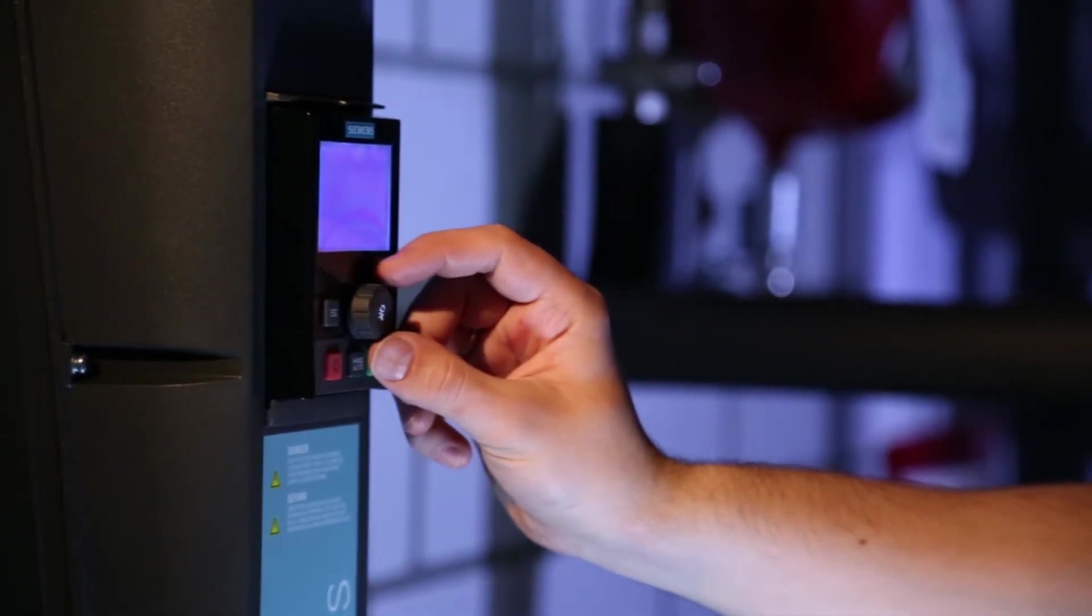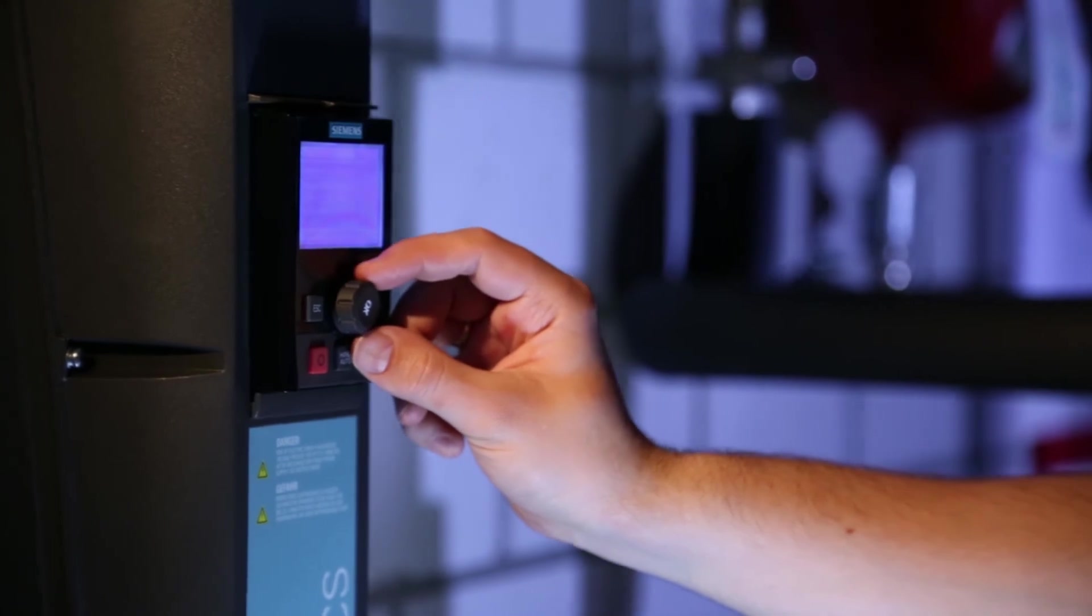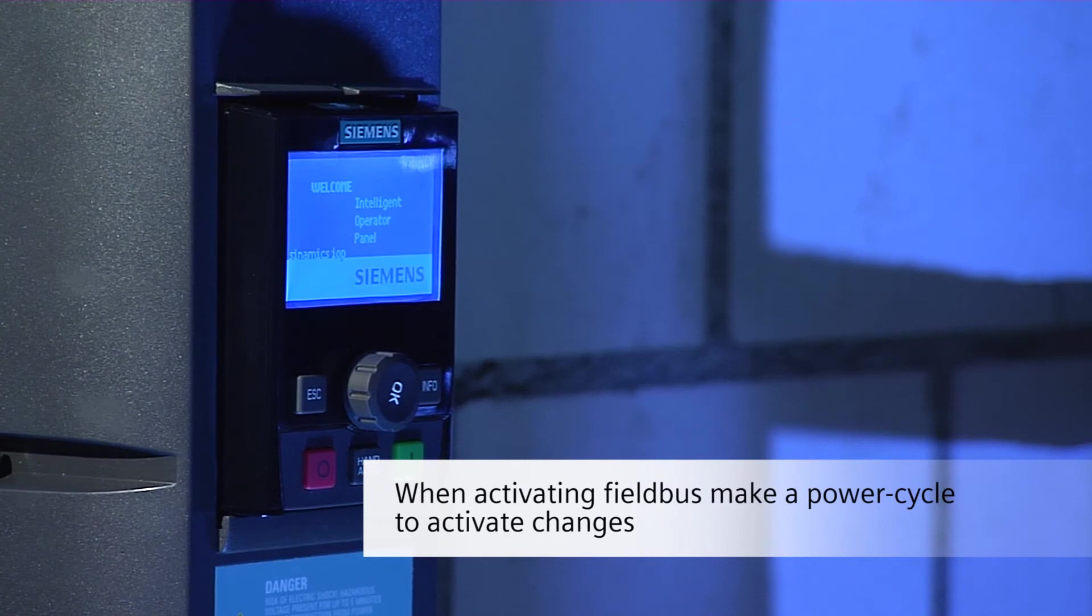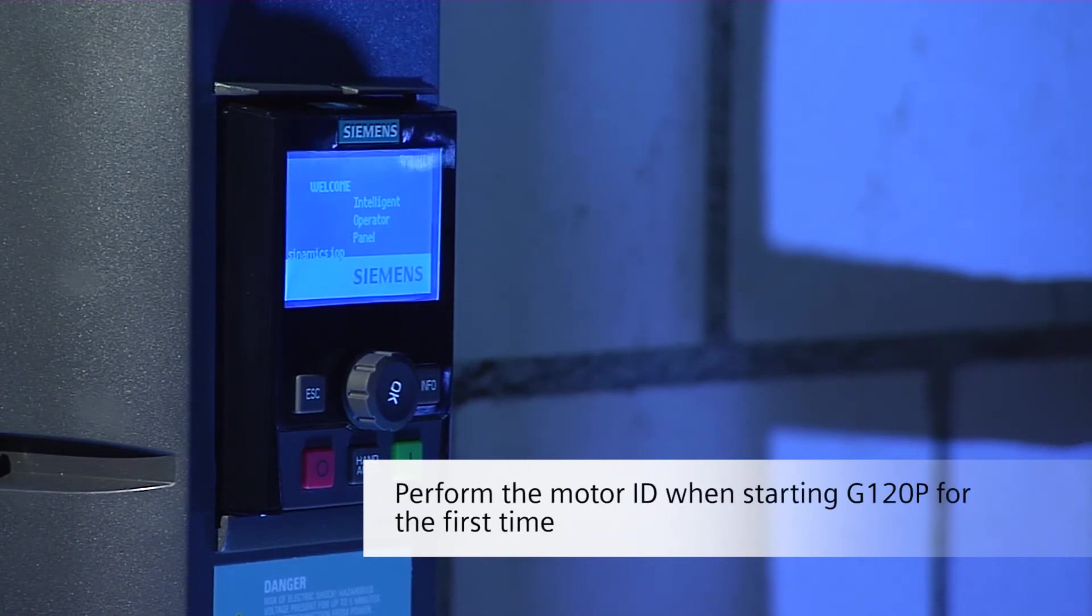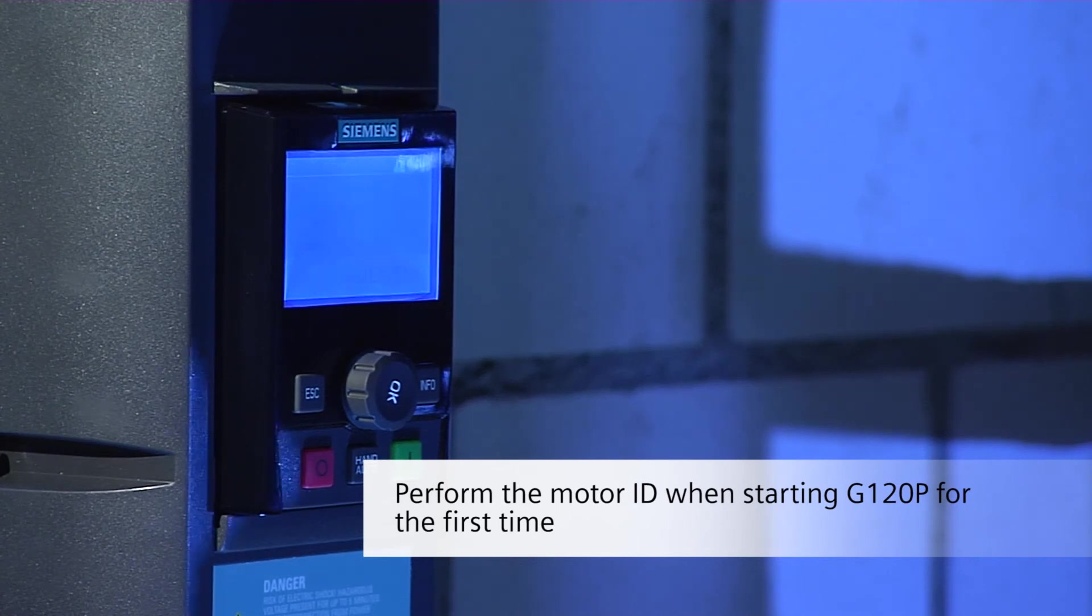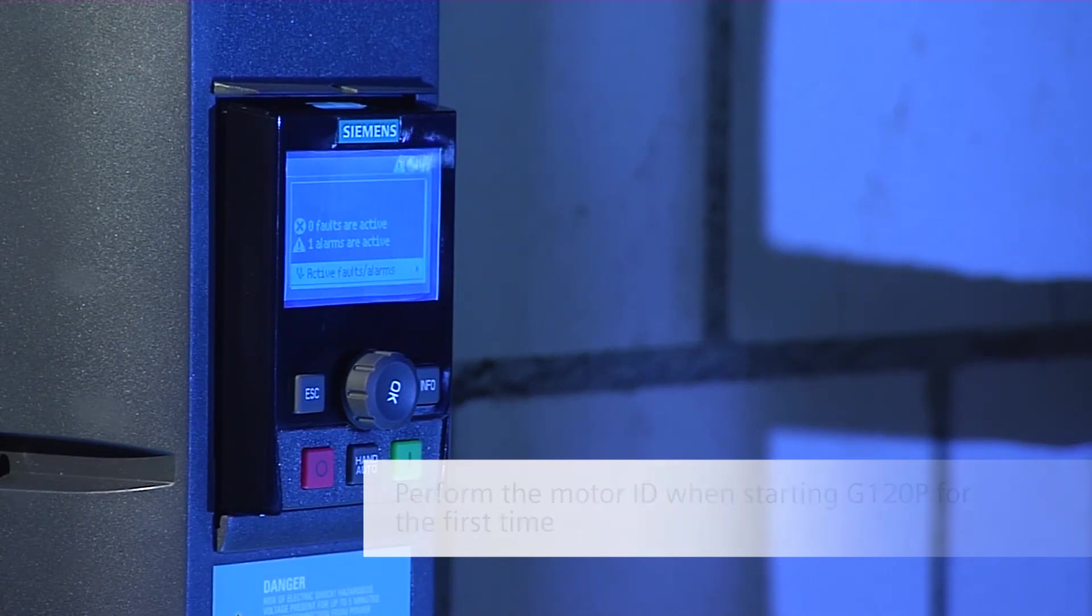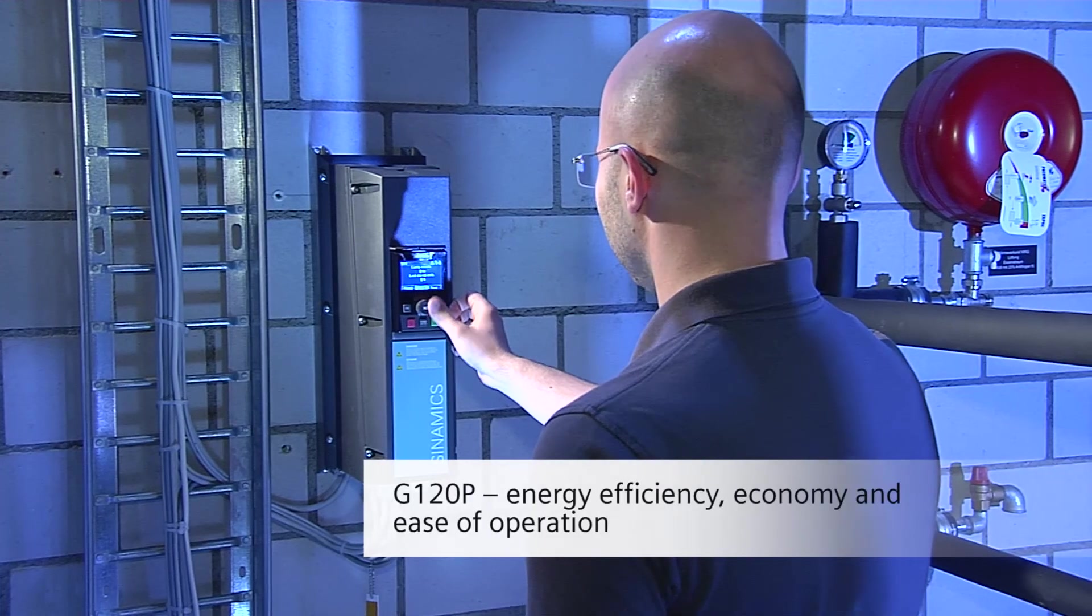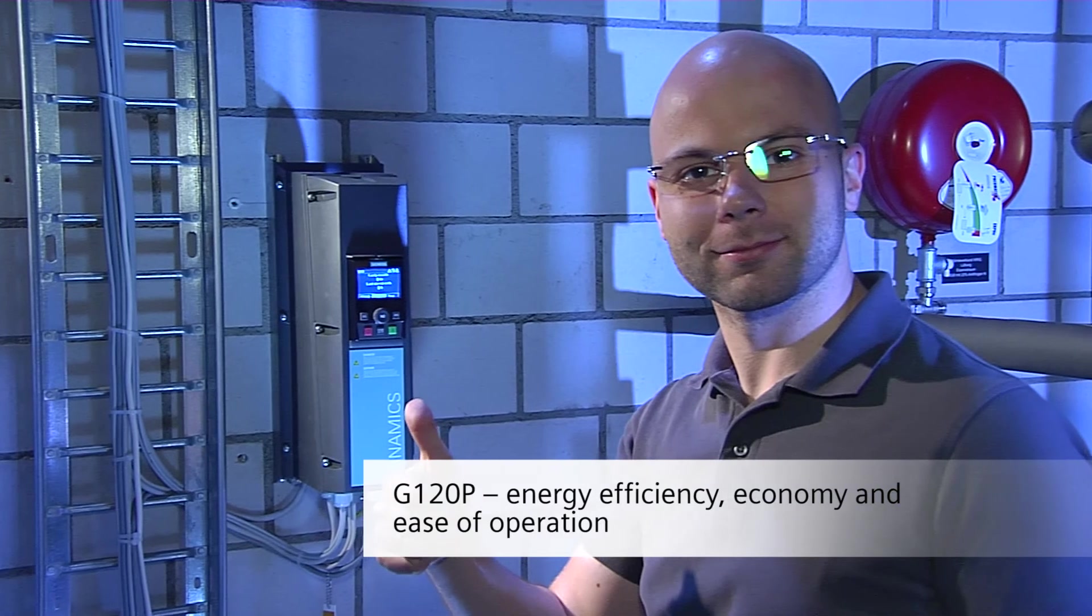Your drive is now almost ready for operation via Modbus. Toggle the power once in order to reboot the control unit so that all fieldbus settings become active. The Getting Started Guide gives more information about other Modbus parameters such as baud rate and timing. It's this easy to commission your G120P using IOP.